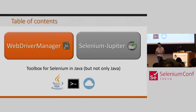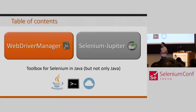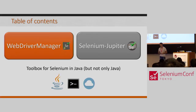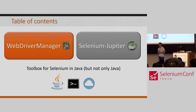These projects are called WebDriverManager — that's the first one — and the second part of my talk is about Selenium Jupiter, which is about JUnit 5. These two projects are made in Java, but as we will discover, it's not only for Java — they can be used for other use cases.